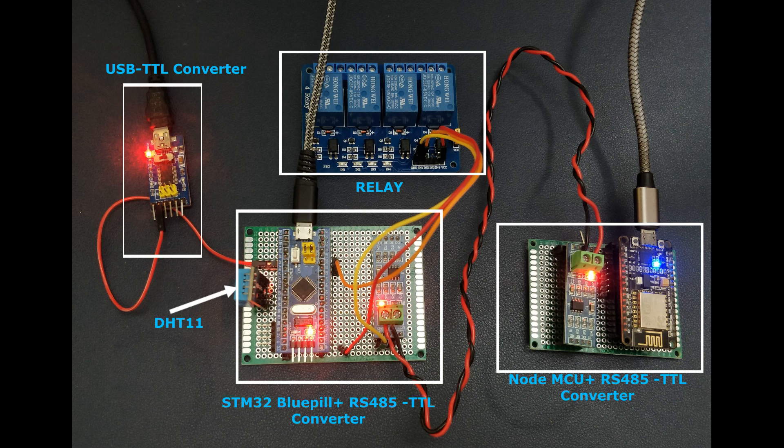In the Modbus server we have configured two registers: a holding register to store the temperature data from the DHT11, and a coil register which contains the status of the relay. We are continuously updating the holding register values in the server, and the coil register value is updated from the MQTT dashboard. The coil on/off status is communicated to the NodeMCU via MQTT first, then the same information is written back to the coil register via Modbus.